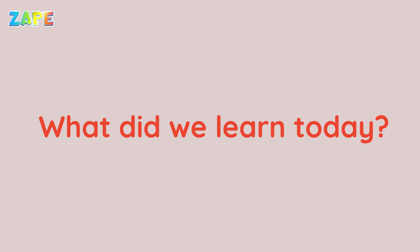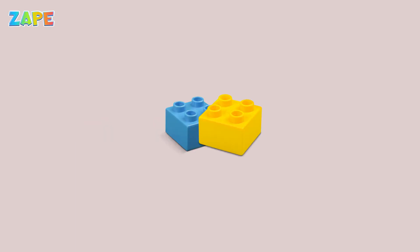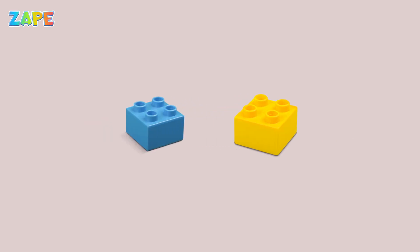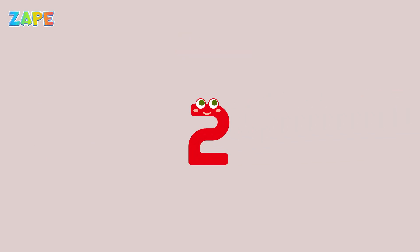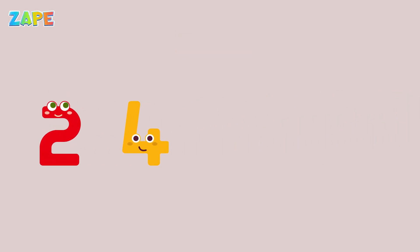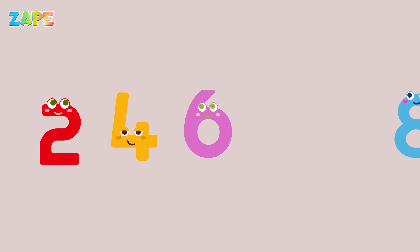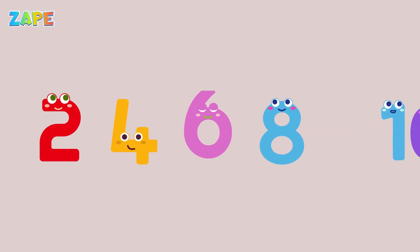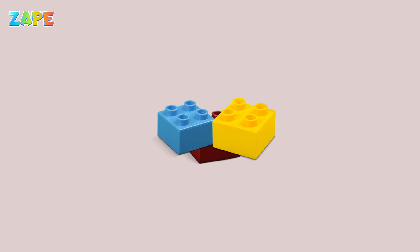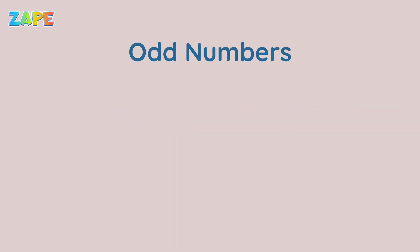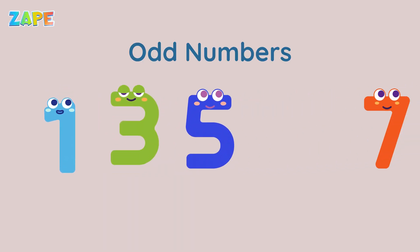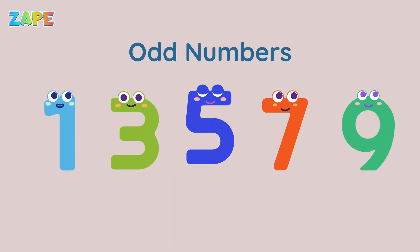So what did we learn today? If a number can be split into two equal groups, it's even — like two, four, six, eight, ten. If one block or cookie is left alone, it's odd — like one, three, five, seven, nine.